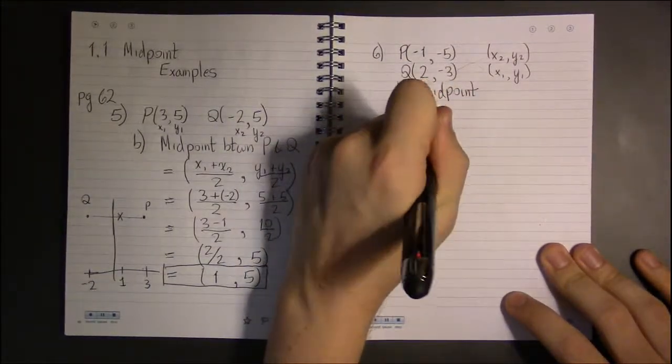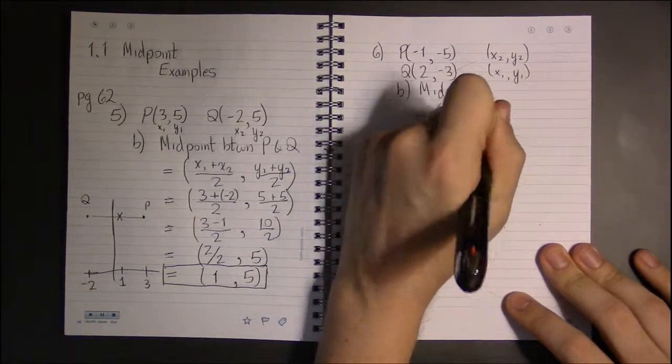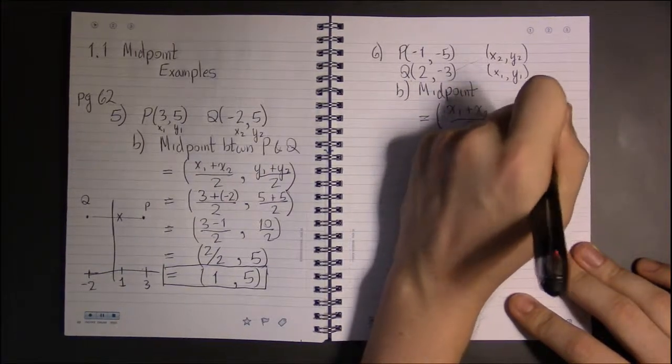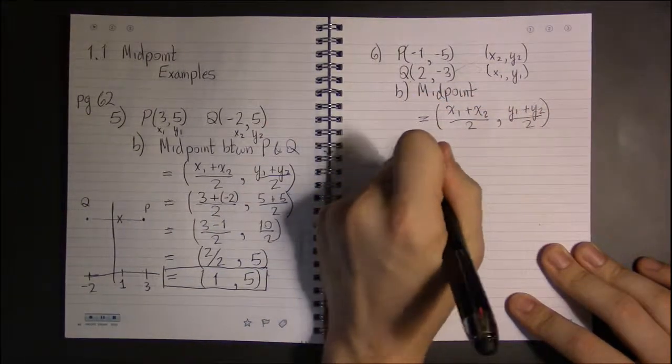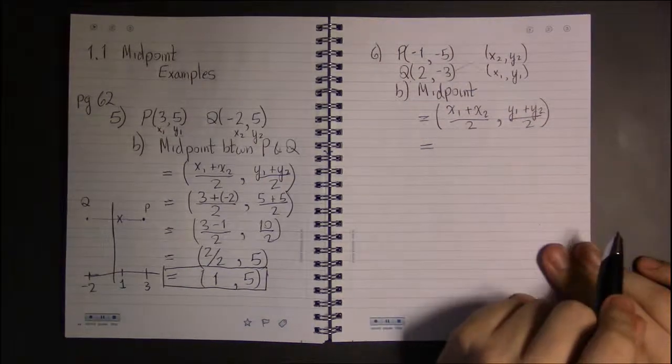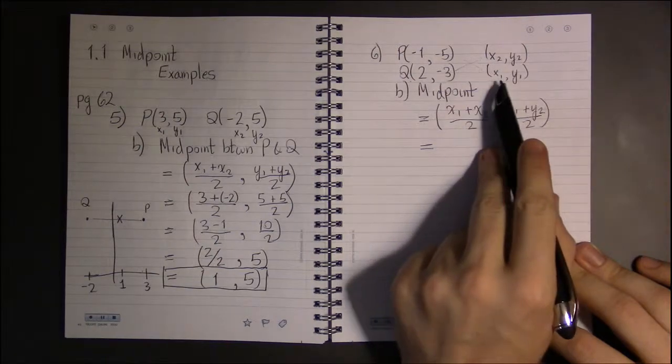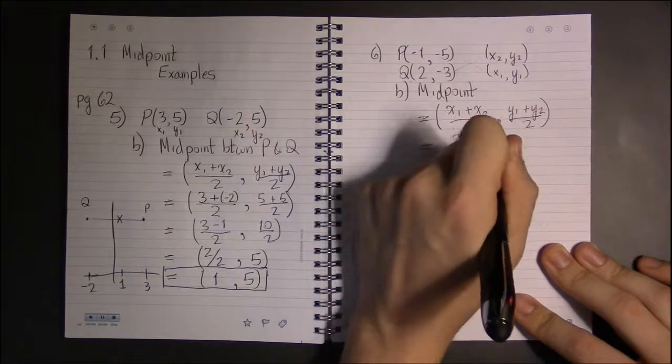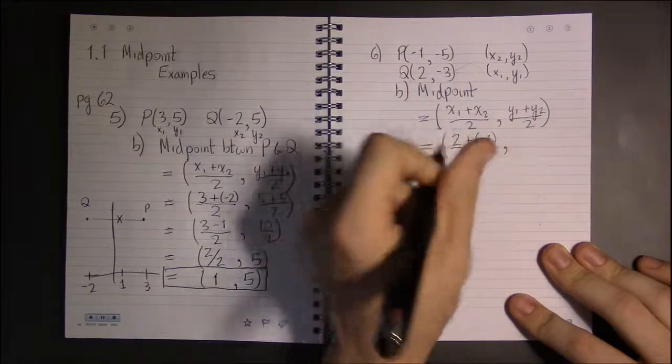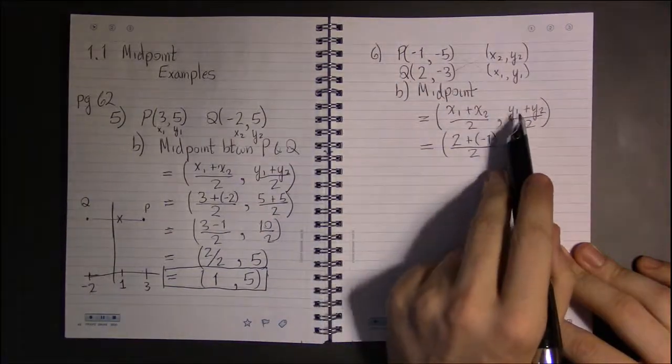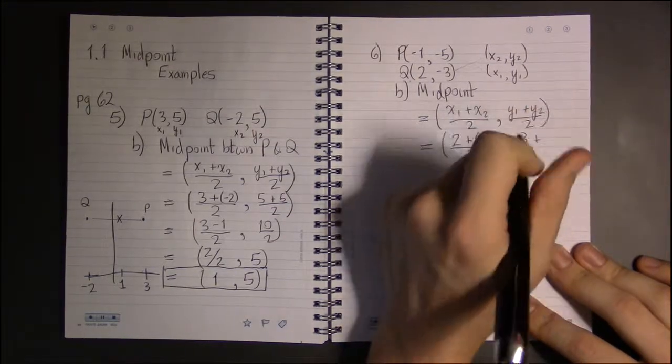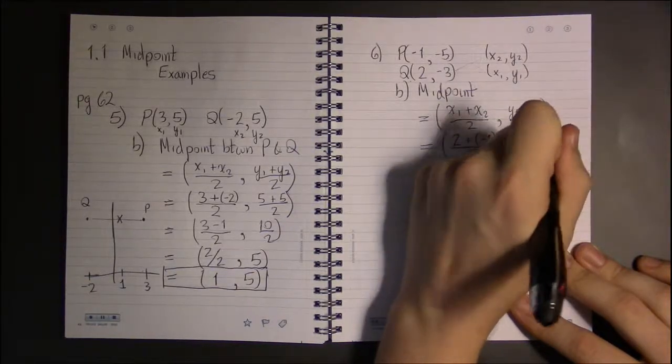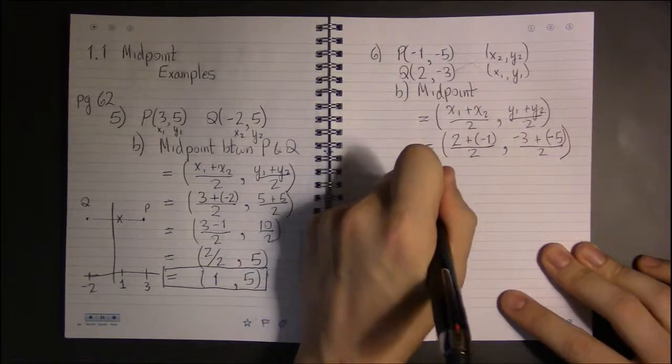So our formula for the midpoint is x1 plus x2 divided by 2, comma y1 plus y2 divided by 2, the average of the x coordinates and the average of the y coordinates. So let's see, what do I have? x1 in this case is 2, plus minus 1, minus 1 being x2. y1 is minus 3, and y2 is minus 5. So now we just have to do the arithmetic.